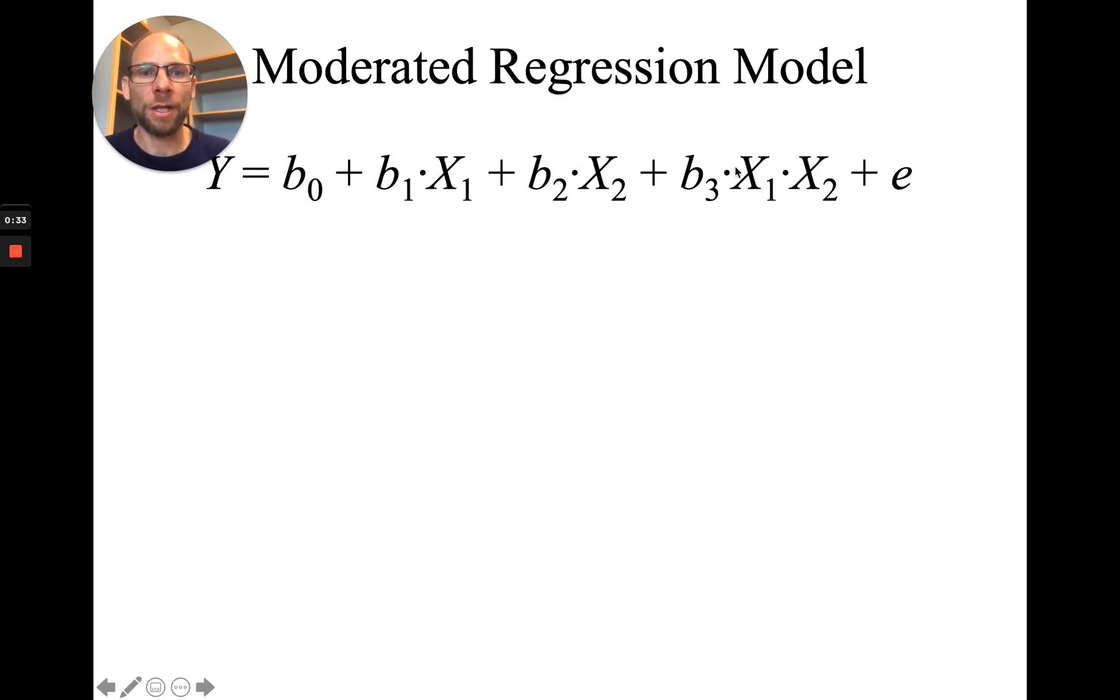You can see that the equation includes this product term, x1 times x2. This is treated like a separate predictor variable and gets its own regression coefficient, b3.